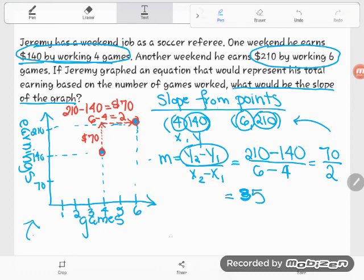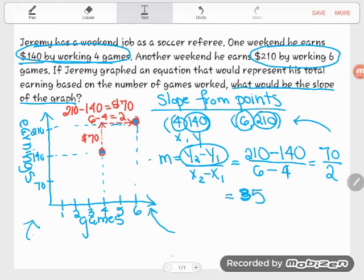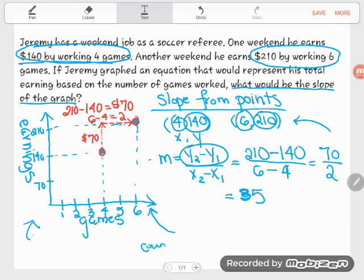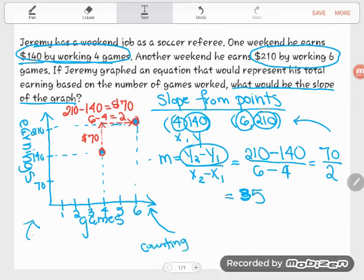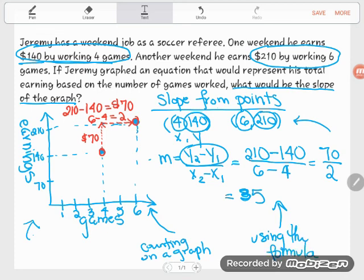So this line again has a slope of 35. It doesn't matter whether you get that information from counting on a graph or from using the slope formula - do whichever way you think is clever, whichever way you like better. But the slope of this line is 35, it's the dollars he earns per game.